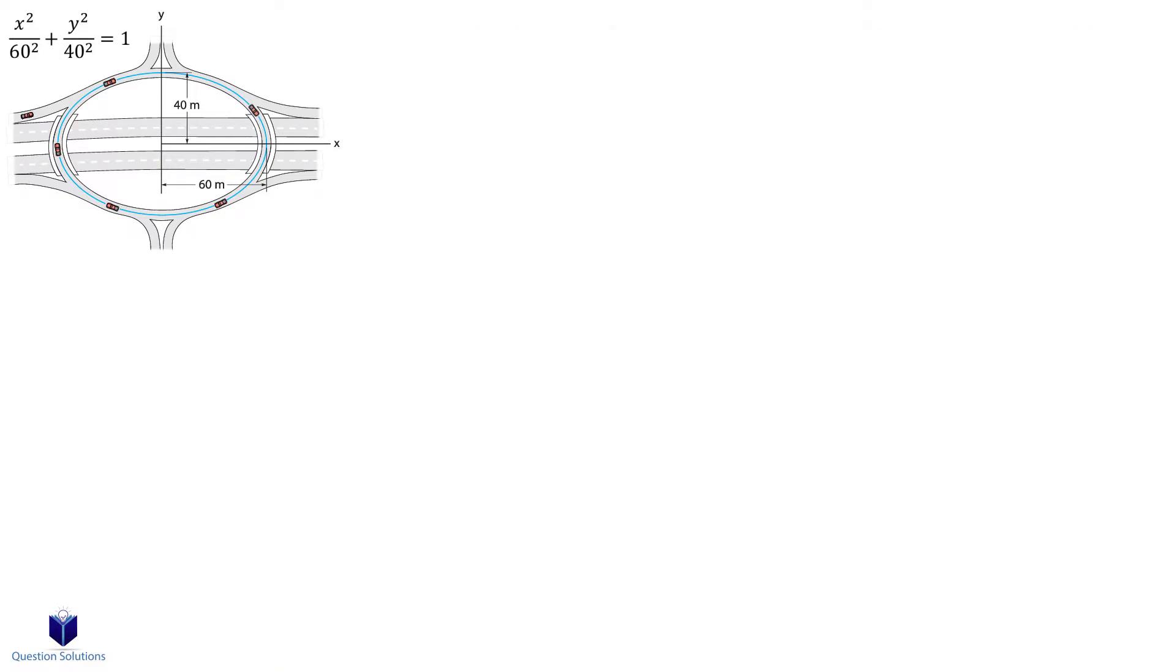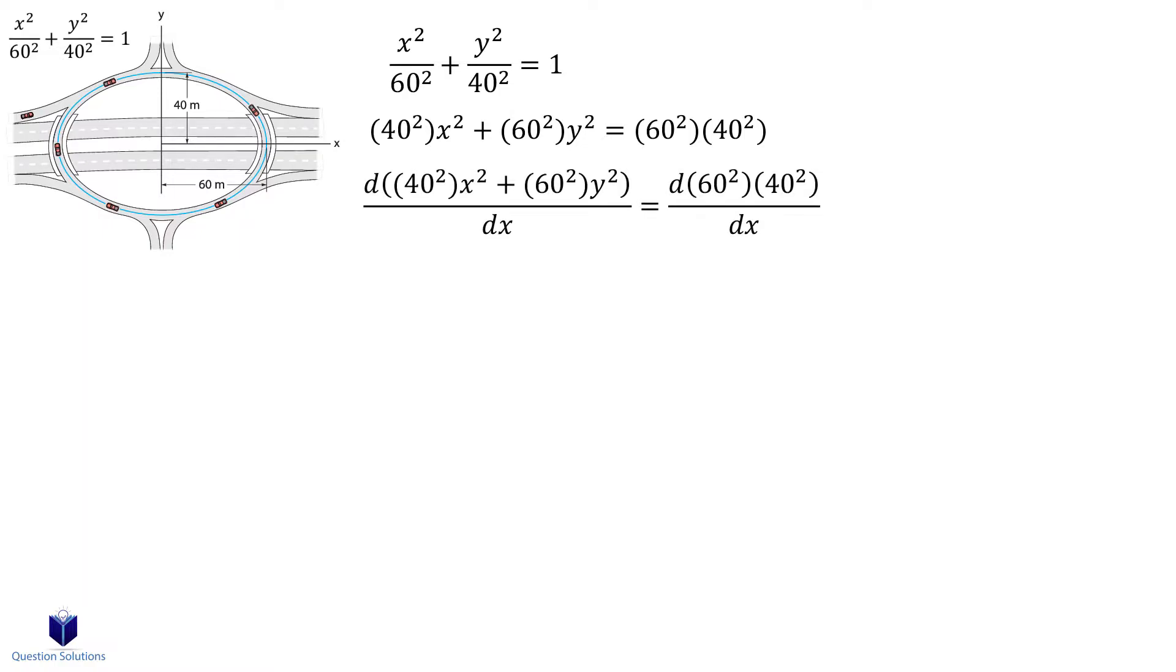The first thing we need to do is actually take the derivative of this equation given to us with respect to x. Let's start there. So we can multiply both sides by the denominator to write it like this, then differentiate with respect to x. Divide everything by 2.